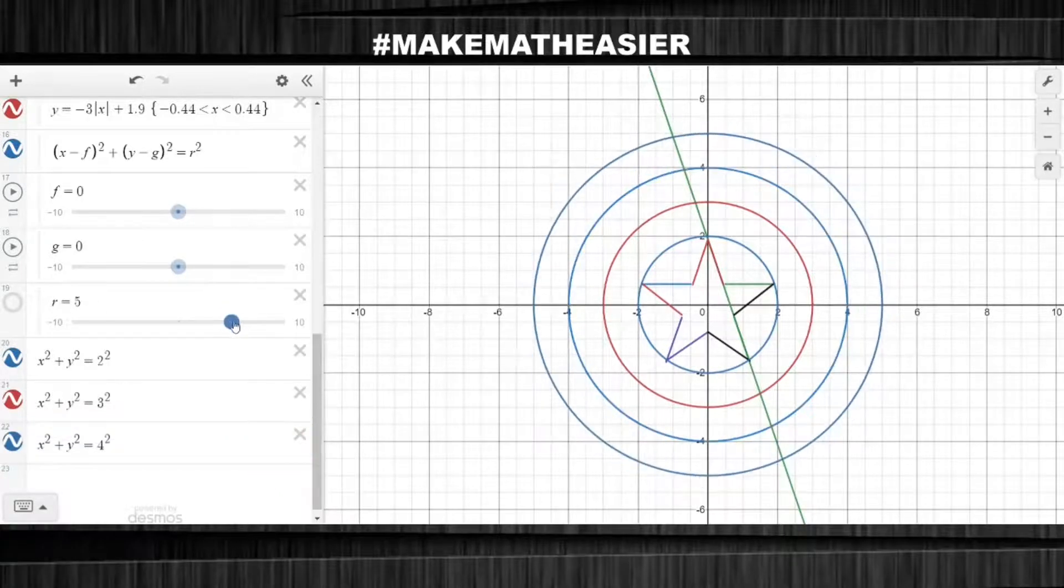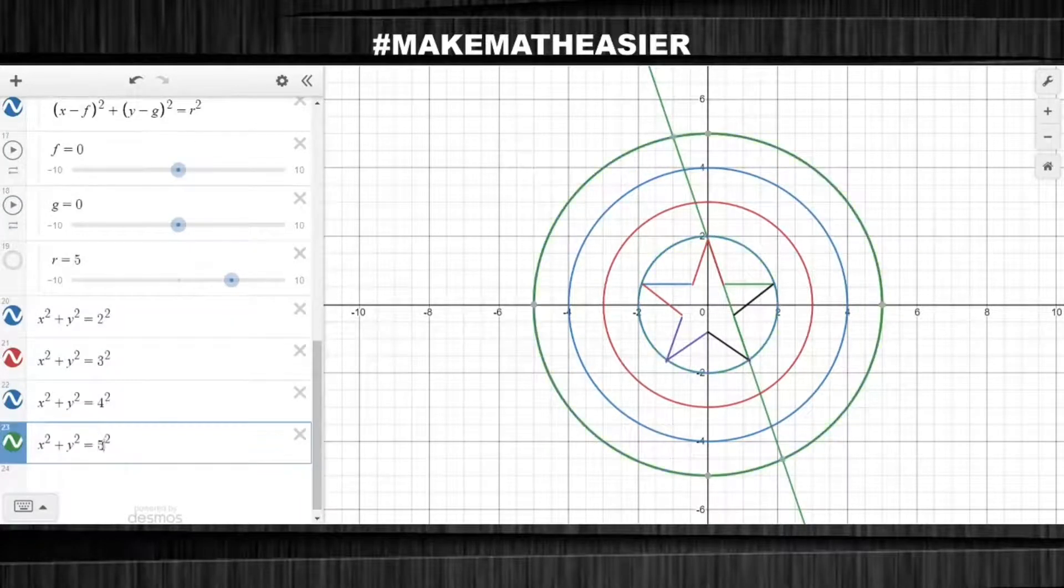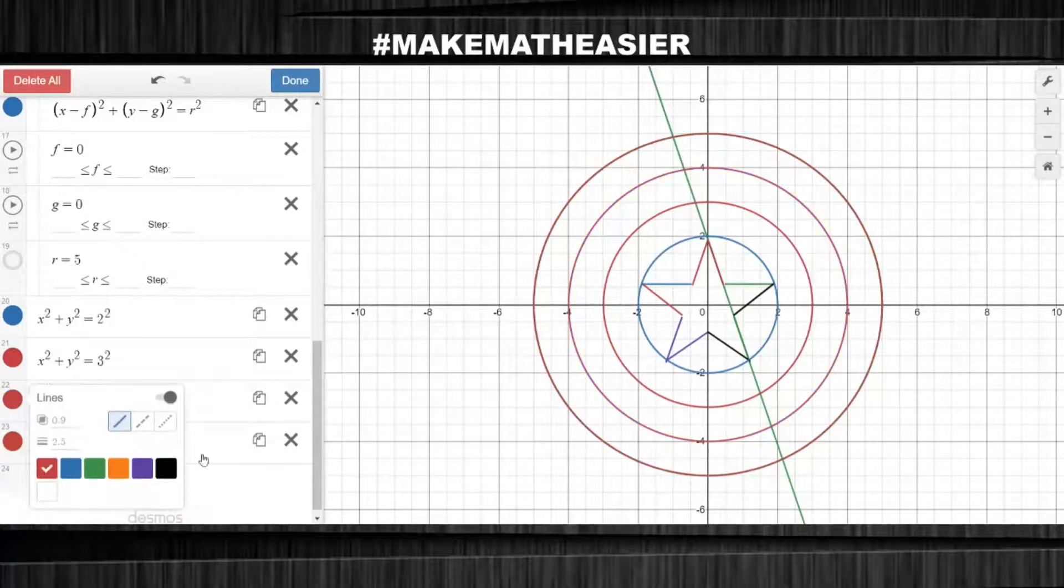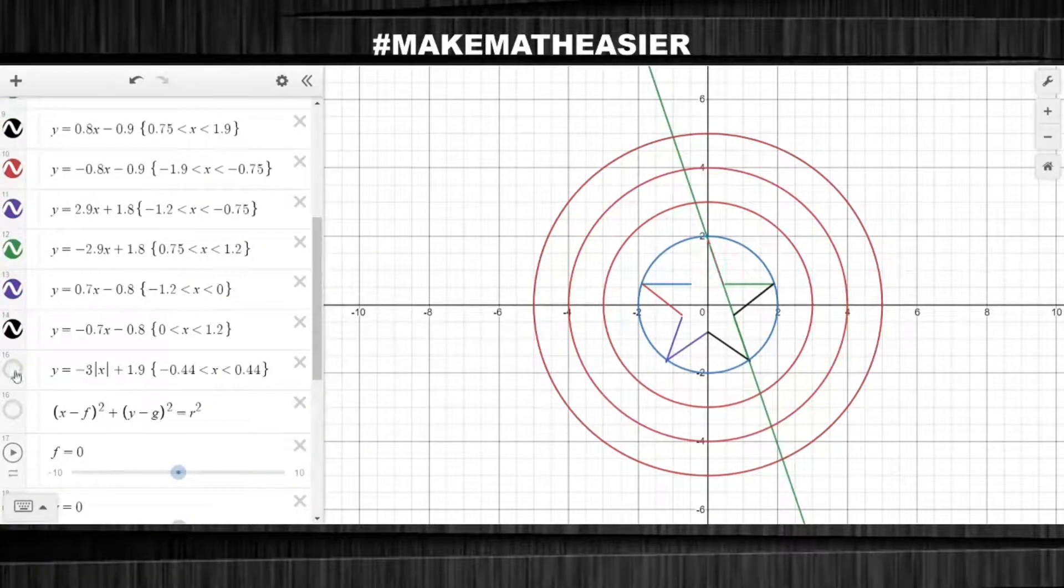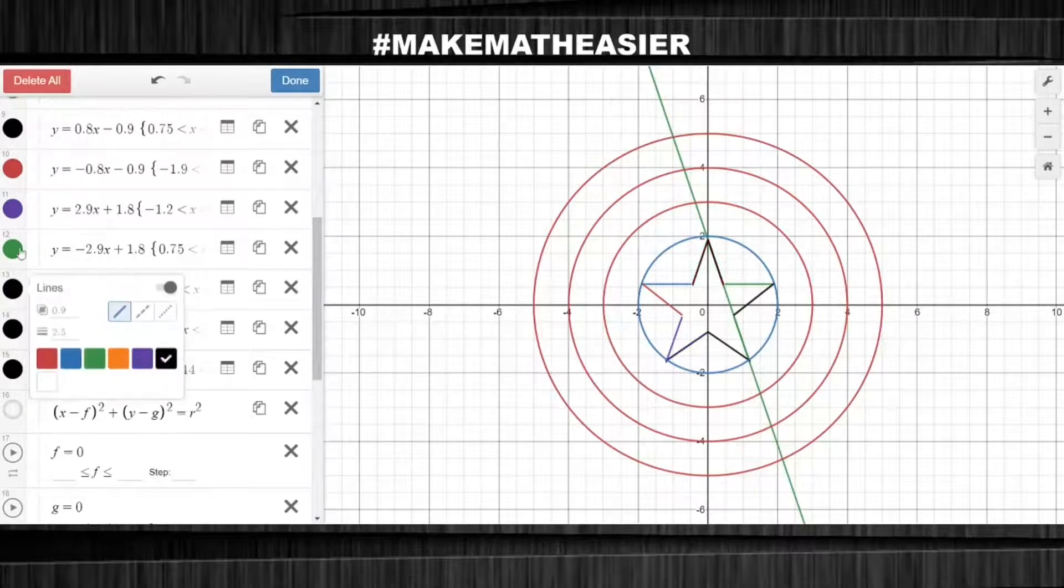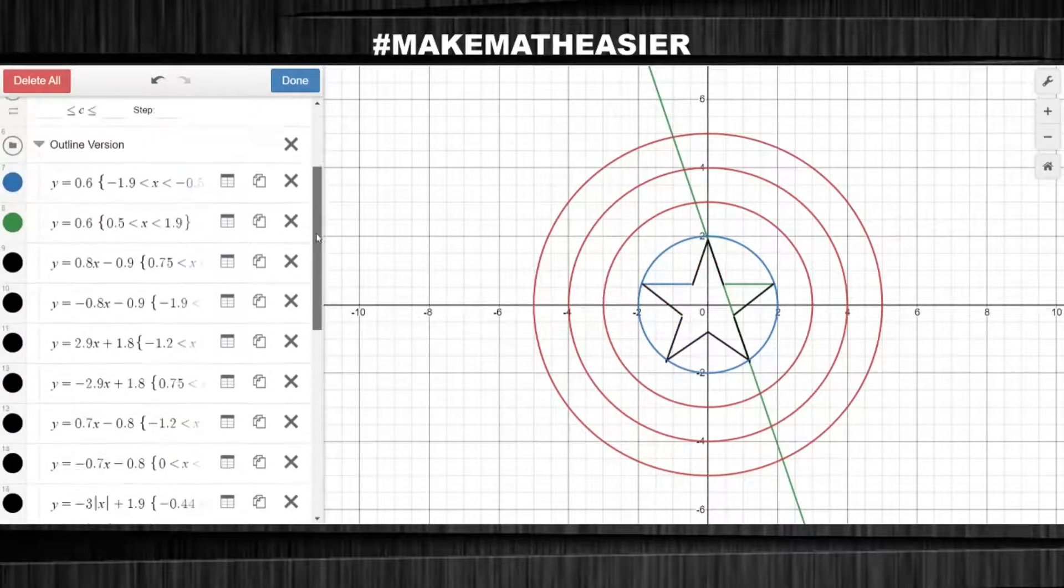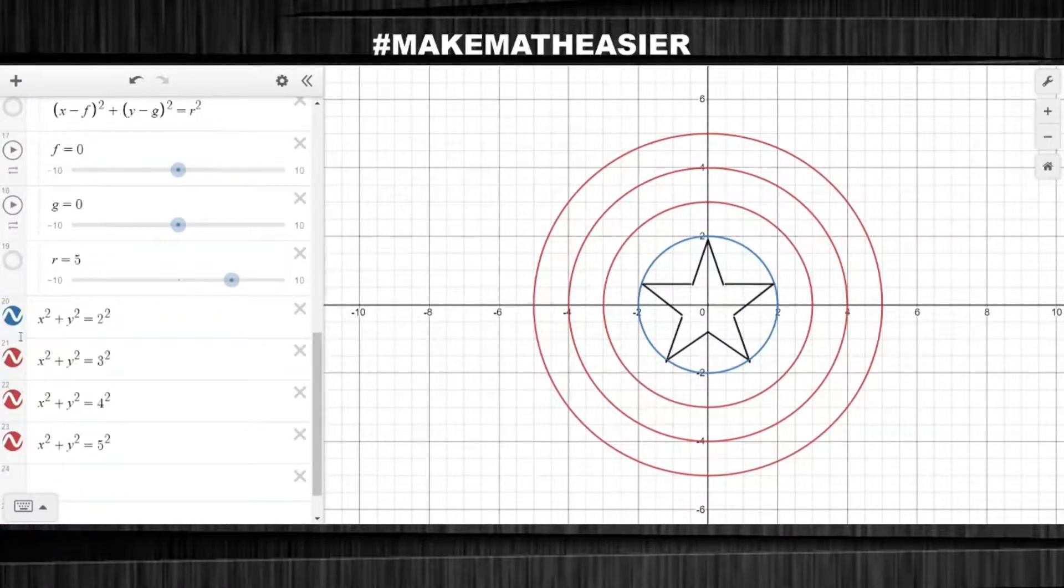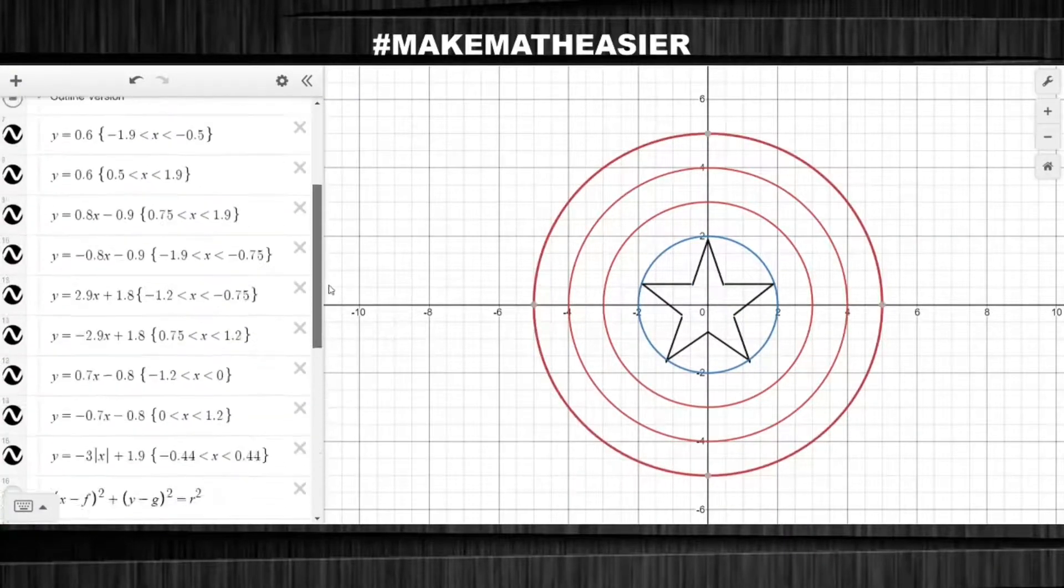Then the next one will be four. And finally, the last one will be an R size of five. Now, let's set all the appropriate colors. And here we go, the most awesome looking Captain America shield.